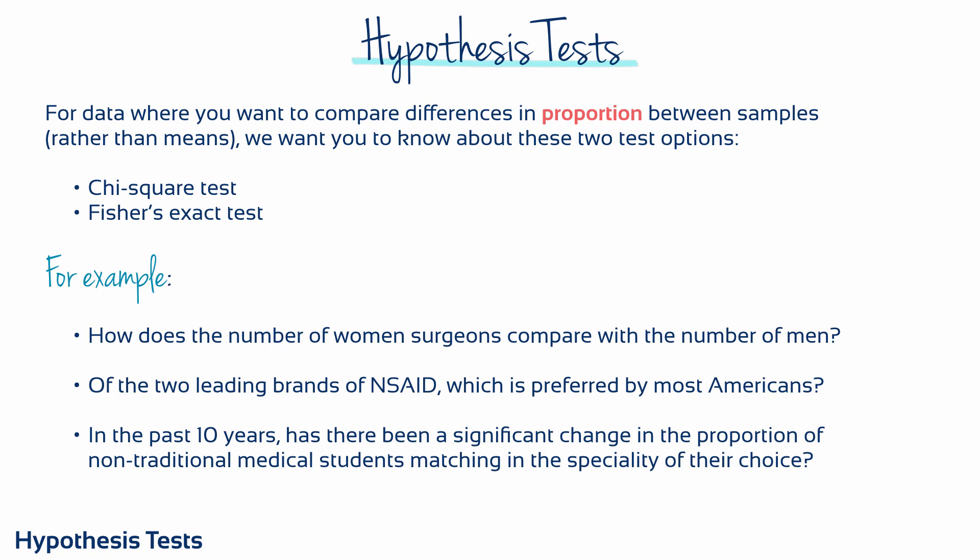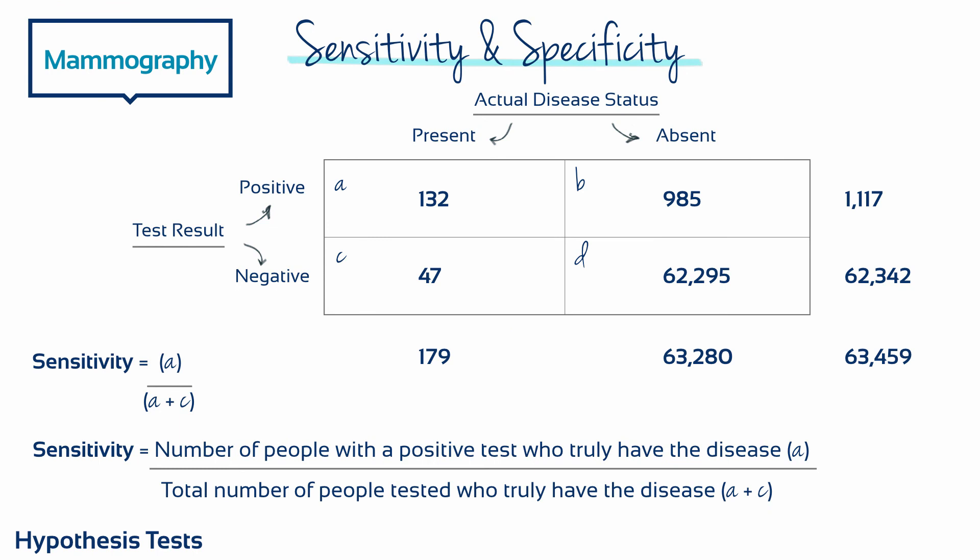Here are three examples: How does the number of surgeons who are women compare with the number who are men? Of the two leading brands of NSAID, which is preferred by most Americans? In the past 10 years, has there been a significant change in the proportion of non-traditional medical students matching in the specialty of their choice? Note that each example asks about proportions — individuals are classified into categories and we want to know what proportion of the population is in each category. The data for these tests are usually organized into a contingency table, large enough to accommodate all the individual sample groups involved.